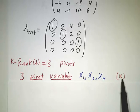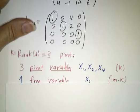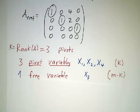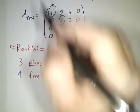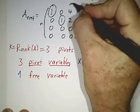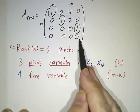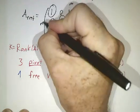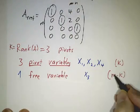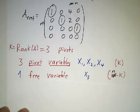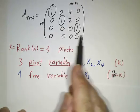In general, if you have a matrix of rank k, you have k pivot variables. And the remaining variables are called free variables. So if you have an m by n matrix, you have as many variables as you have columns.